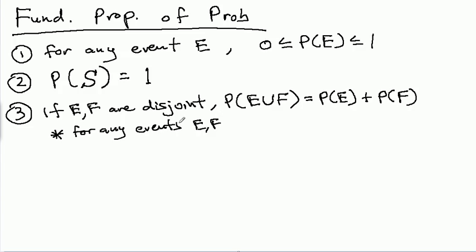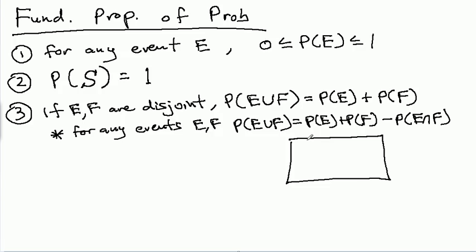If E and F are disjoint, then the probability of E union F is simply the sum of the two probabilities. Okay, so this is if we know that E and F are disjoint. In other words, they don't share any outcomes. Then the probability of the union of the two events is equal to the sum of the individual probabilities. And let me actually make a note here.